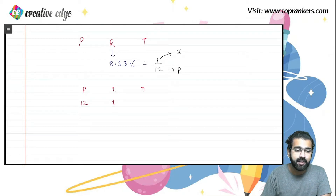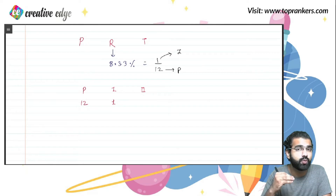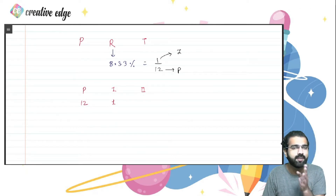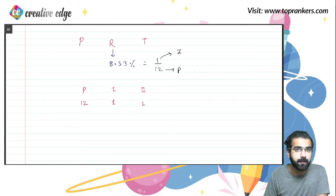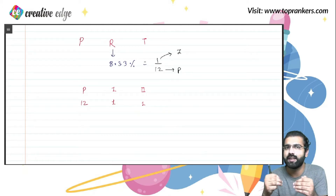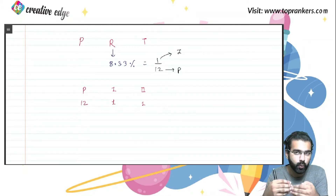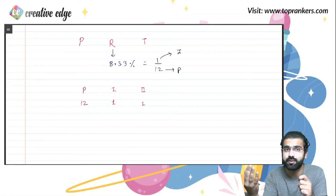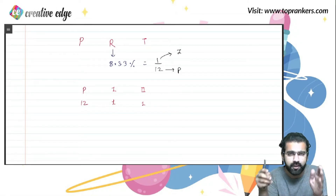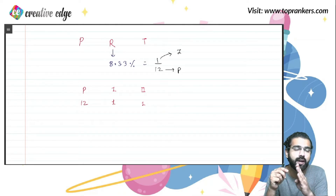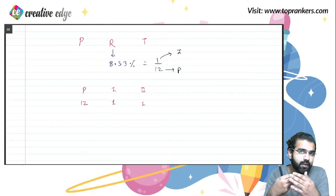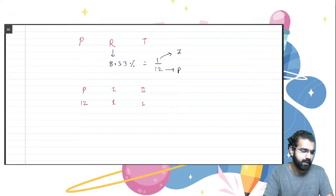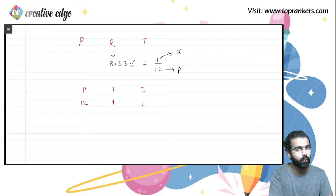Similarly, in the second year the interest remains the same, because simple interest works the same every year. So on 12 again, when you apply 8.33% rate of interest, it generates 1 more. For as many years you are taking this interest, it accumulates that many times — it gets multiplied by the number of years — and that's how the formula P × R × T / 100 got generated. Let's take a question and understand it better through an example.